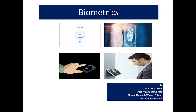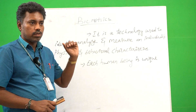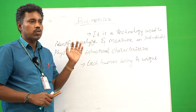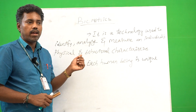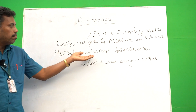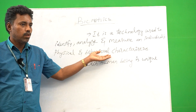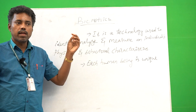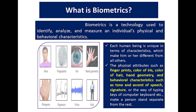Biometrics introduction — we are going to see the small basics of our tools. It is a technology used to identify, analyze and measure an individual's physical and behavioral characteristics. Each human being is unique in terms of characteristics.